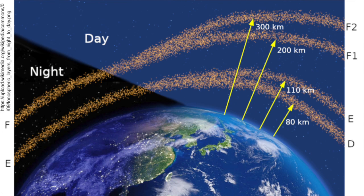As night conditions turn into day conditions, the F layer will separate. An F2 layer will appear up high, and F1 is lower to the Earth. Below F1 is the E layer. Also during the day, a new layer — the D layer — will show up closer to the Earth than layer E.